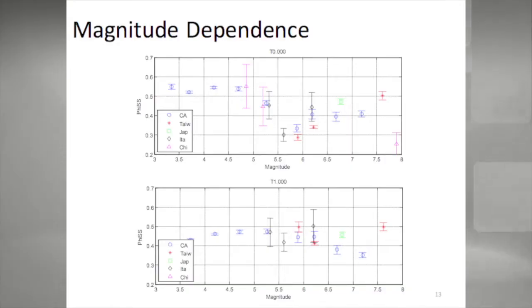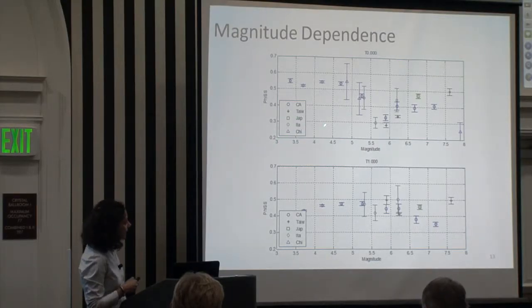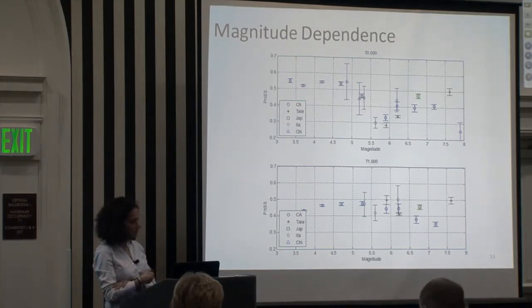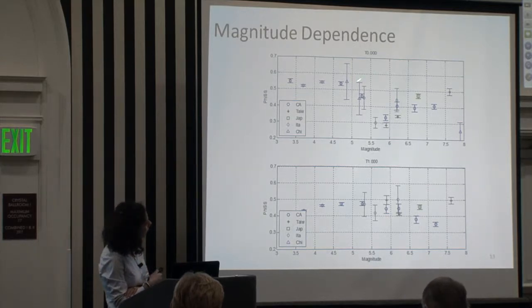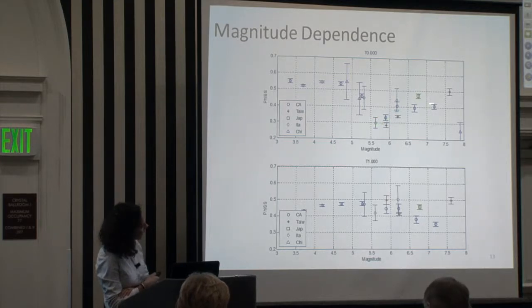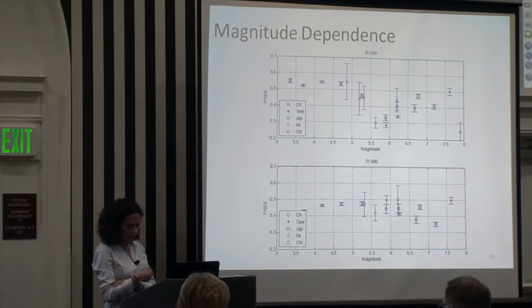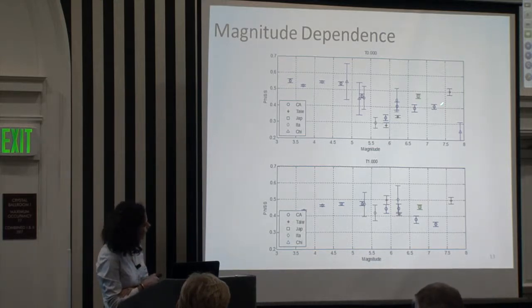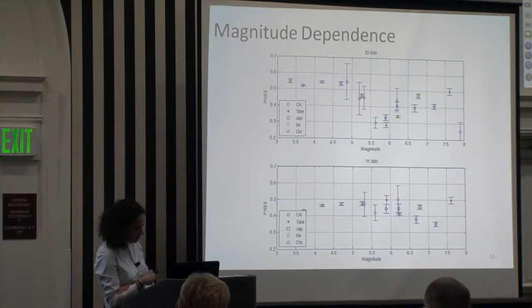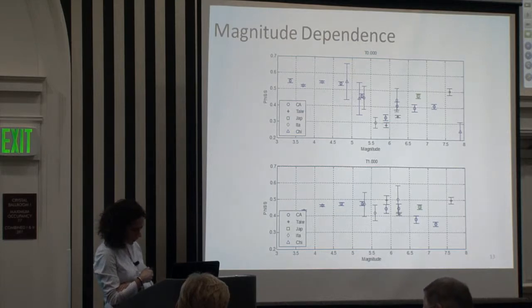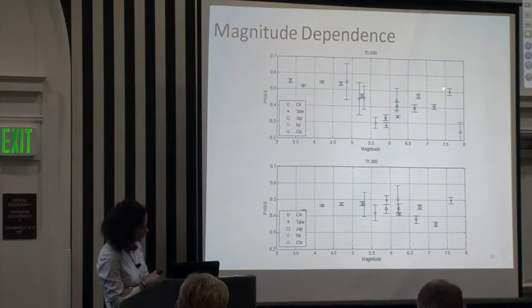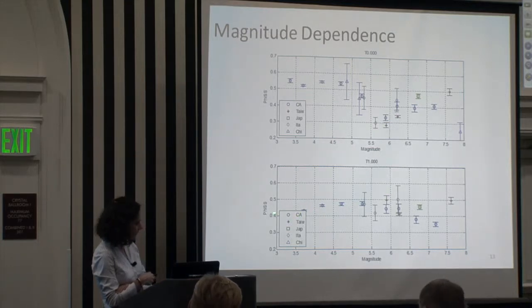Looking at magnitude dependence: for PGA, phi SS versus magnitude split by region — California circles are roughly constant up to magnitude 5, then drop, then rise slightly and level off. Taiwan stars group around three magnitude ranges with smaller phi SS. At a period of one second, California phi SS slightly increases then decreases again from magnitude 5 onwards.